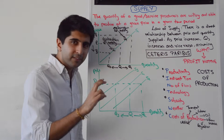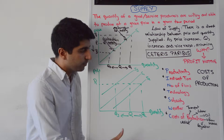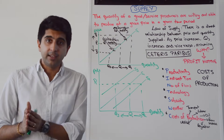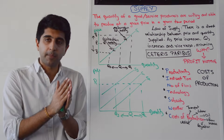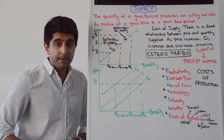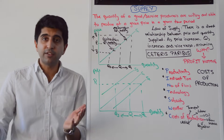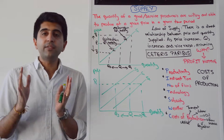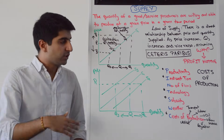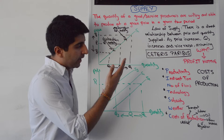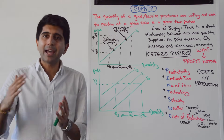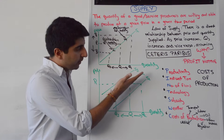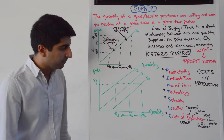W is weather — this one doesn't necessarily have anything to do with costs of production. Good weather will allow supply to increase and shift the supply curve to the right from S1 to S2. That could be excessive rainfall, good weather, or excessive sunshine — whatever weather allows more supply. Whereas bad weather, whatever that might be, will shift the supply curve to the left from S1 to S3.